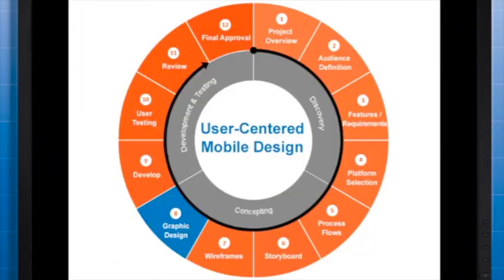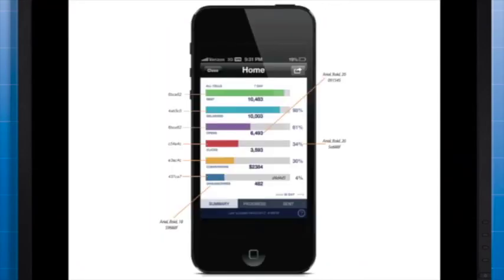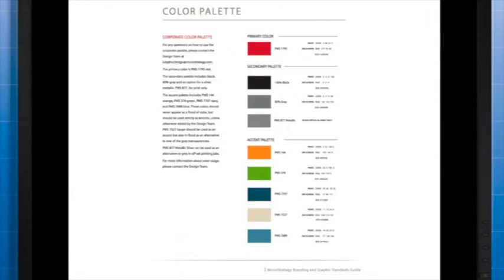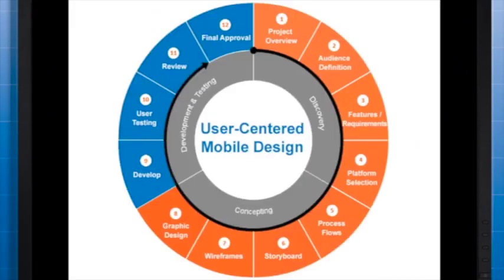Not all projects will include graphic design, but if yours does, this is the stage where color, font type and size, imagery and icons are created. In this stage, you would apply a look and feel to your wireframes, usually based upon a set of brand guidelines already established by your client. If your client has defined brand guidelines or a corporate style guide, it is important to follow them closely to ensure consistency across all of the client's assets.